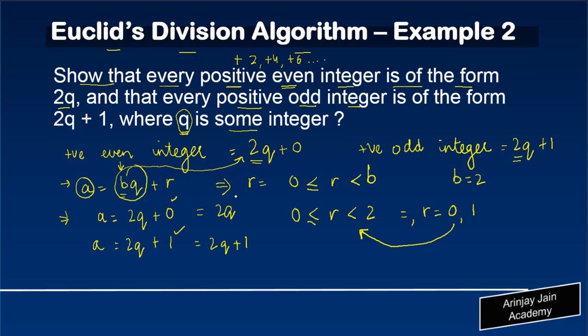Now, we know that if q is any positive integer, if you multiply it by 2, you will always get a positive even integer. Because whenever you multiply any number by 2, you get an even number. And because q is a positive integer, 2q will also be even.